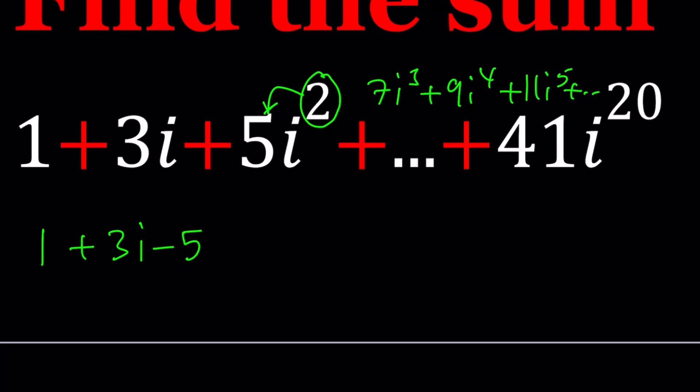5i squared is going to give me negative 5, and then 7i cubed—i cubed is negative i, remember—that's going to give me minus 7i. Then I'll be getting 9 because i to the 4th is 1, and then i to the 5th is the same as i, so it's going to give me 11i. Then I should be getting minus 13 and then minus 15i, so on and so forth.